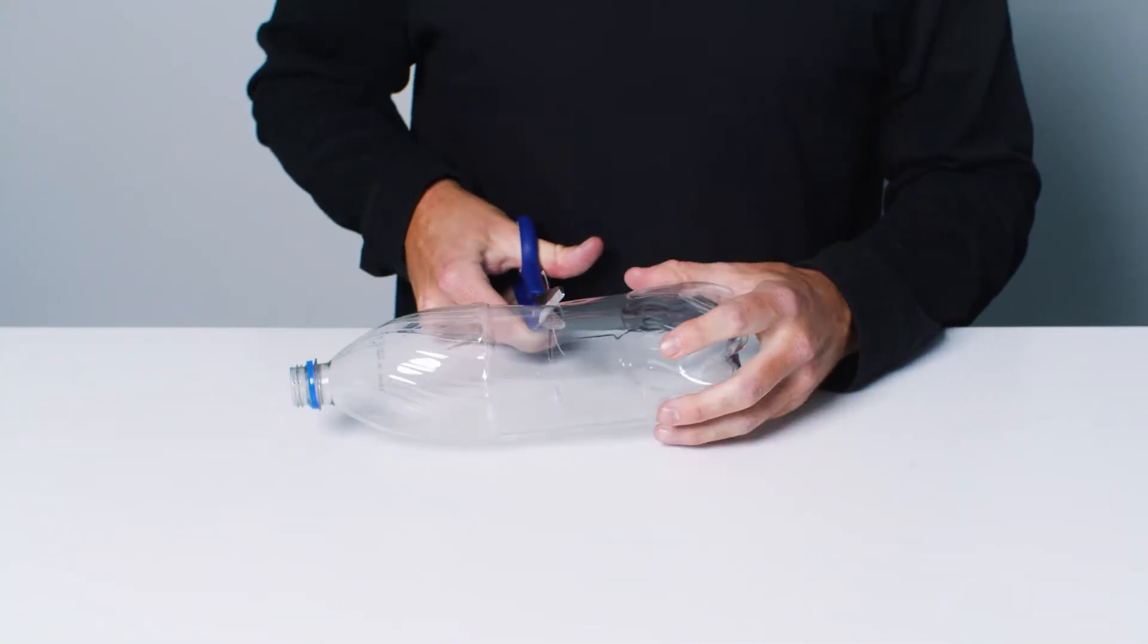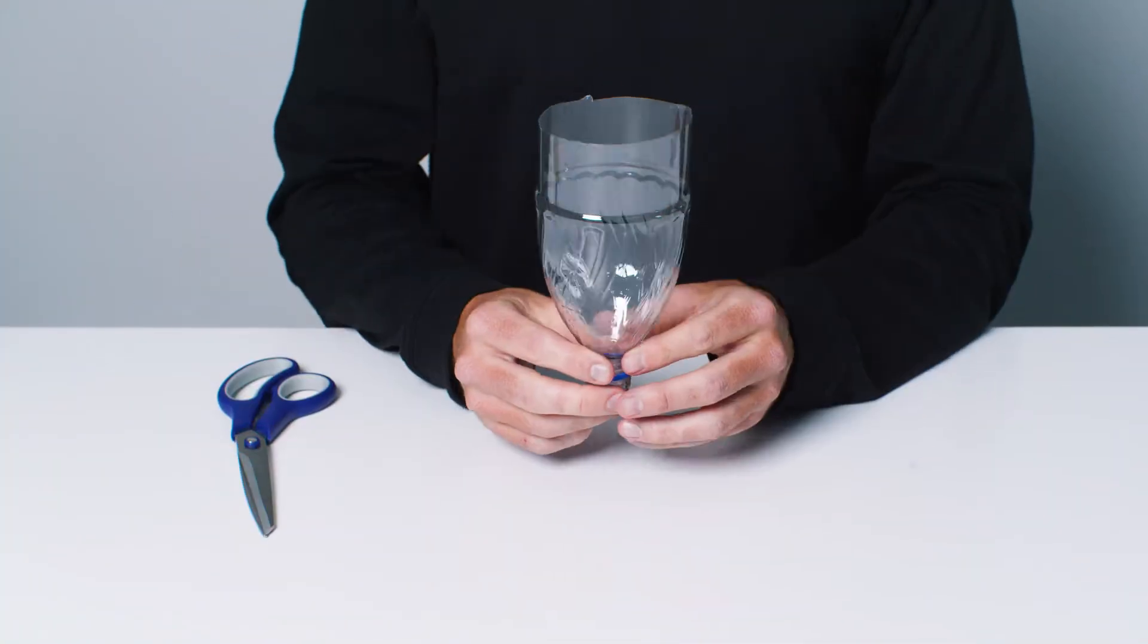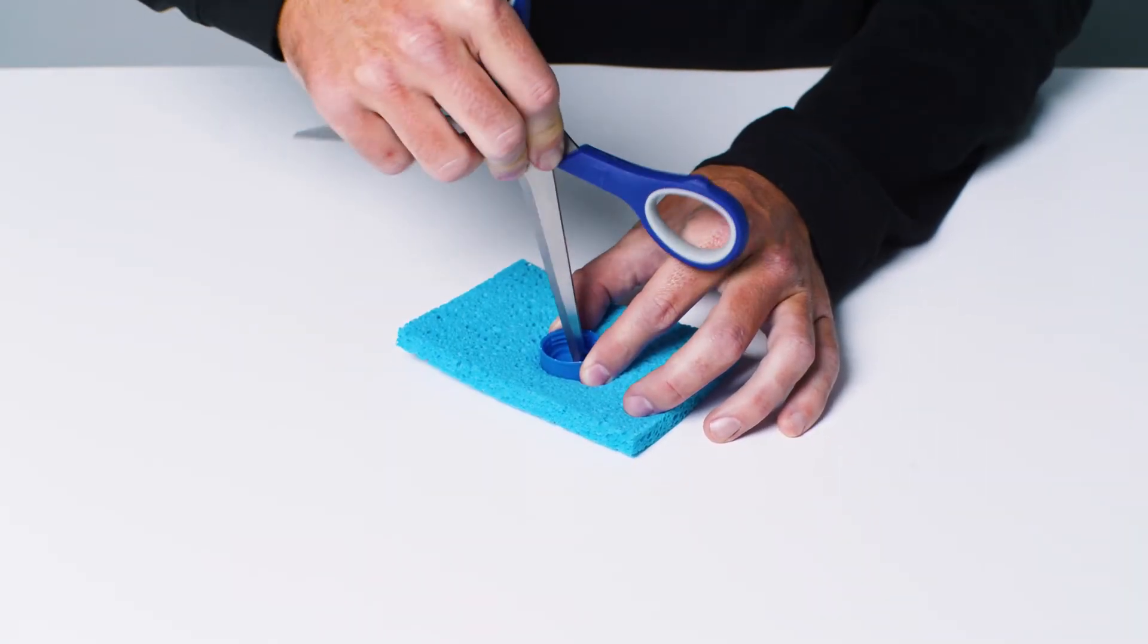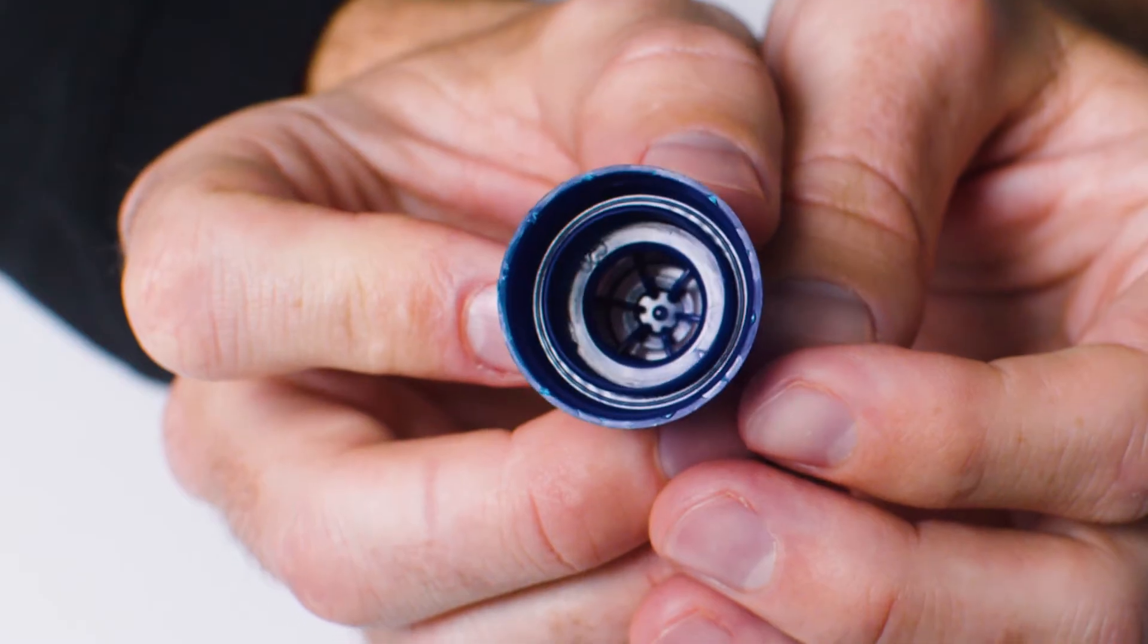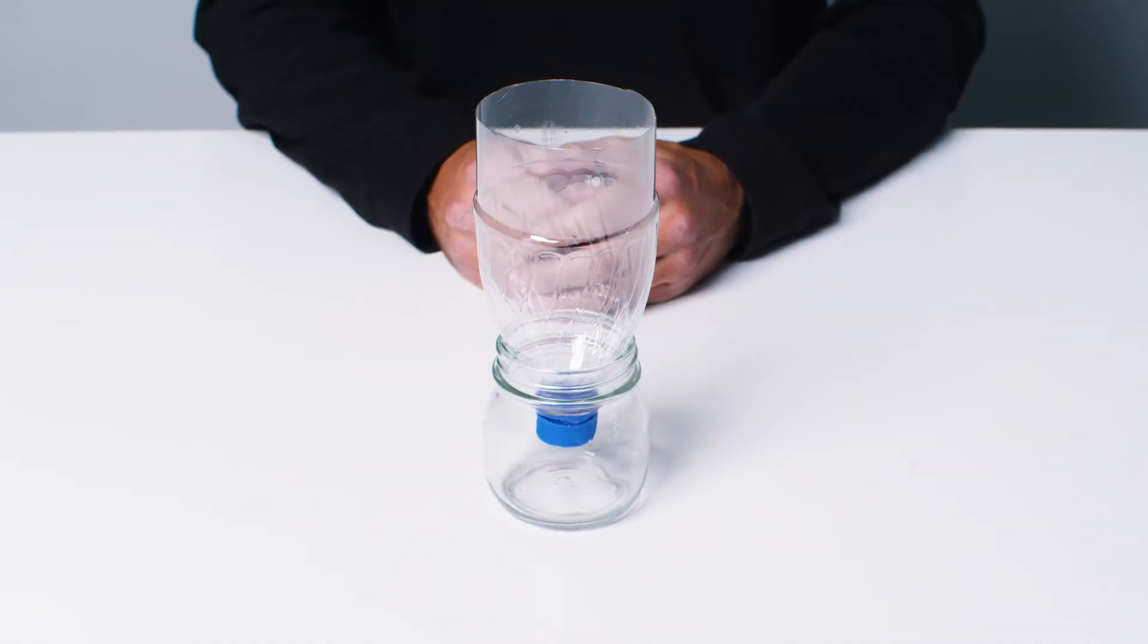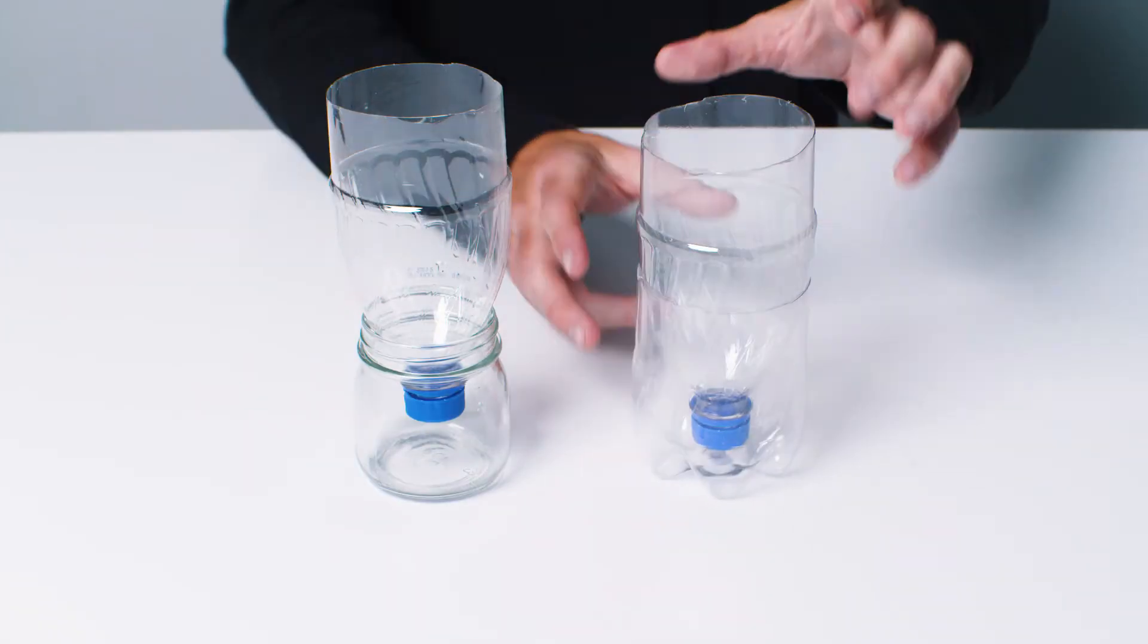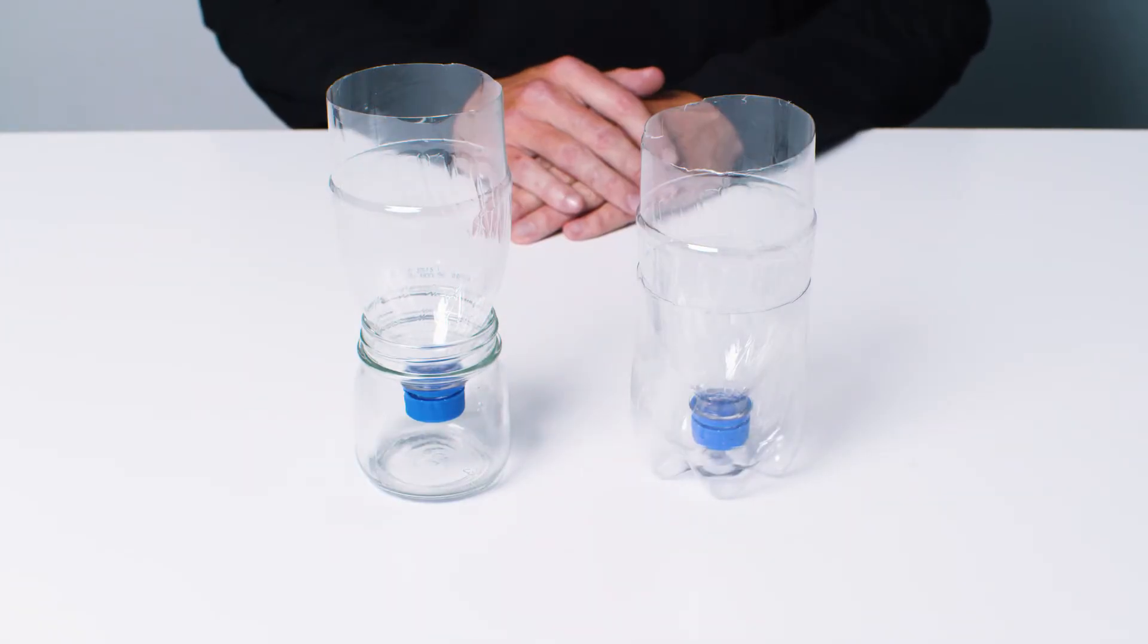First, have an adult cut the bottom off the bottle. And have the adult punch a hole through the lid. Or you could use a pop-top lid. Either of these will allow for drainage. Turn the bottle upside down, placing the neck of the bottle in a jar. Instead of a jar, you could also use the bottom of the plastic bottle we just cut.